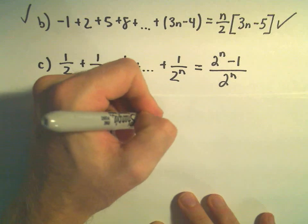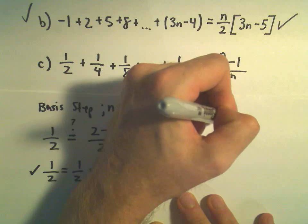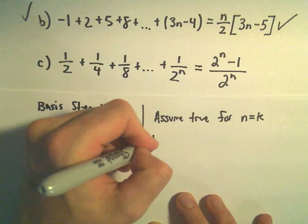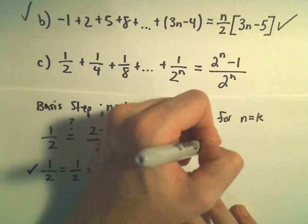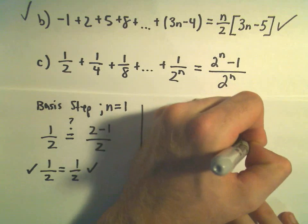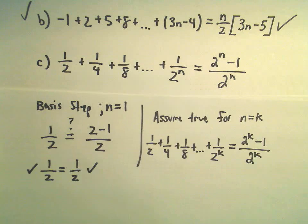Now I'm going to assume this is true for the value n equals k. So 1 half plus 1 fourth plus 1 eighth plus dot dot dot, 1 over 2 to the k, we'll assume that that equals 2 to the k minus 1 over 2 to the k.